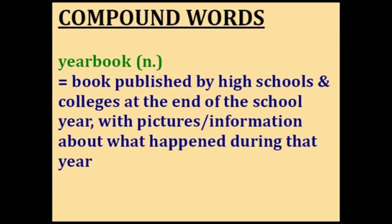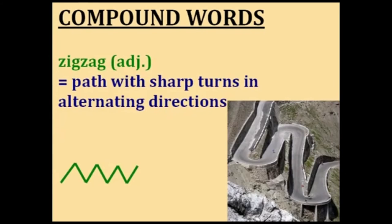Yearbook. In the U.S., many high schools and colleges publish a book at the end of the school year with pictures and information about what happened during that year — this book is called a yearbook. Zigzag — this is a fun word to say. Something that is zigzag follows a path with sharp turns in alternating directions, like the green line that goes back and forth. The picture shows a zigzag road. So you've just learned some compound words from A to Z.